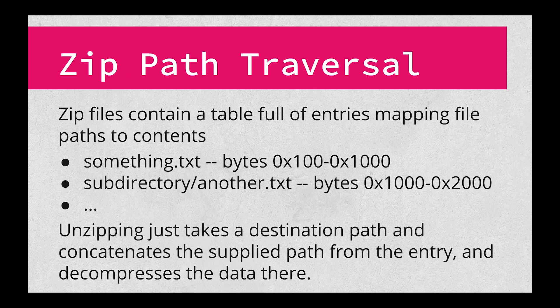Next, we're going to talk about a very closely related bug: zip path traversal. You're probably familiar with zip files, but you may not have spent too much time thinking about how they get unzipped. A zip file contains a table that is, in essence, a directory tree, and a well-formatted zip file will only contain paths like "some/directory/filename.txt". When something unzips files, it takes a destination directory and adds each zip file entry to figure out where to write the final file.